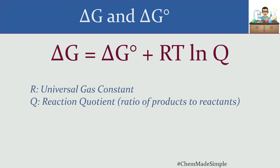The reaction quotient Q may seem familiar — you might be thinking, isn't the equilibrium constant K also a ratio of products to reactants? Well, K is only measured when we're at equilibrium, but Q can be measured at any point. Whatever ratio of products to reactants you have at that particular moment will factor into the delta G value. We can measure delta G at any point in our process — it doesn't necessarily need to be at equilibrium.